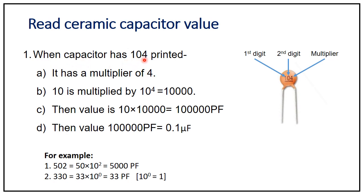When a capacitor has '104' printed on it: here 1 is the 1st digit, 0 is the 2nd digit, and 4 is the 3rd digit representing the multiplier. So we have the value 10, and it is multiplied by 10 raised to the power of 4.